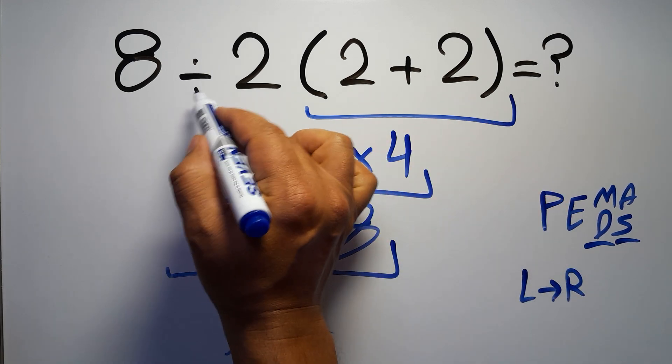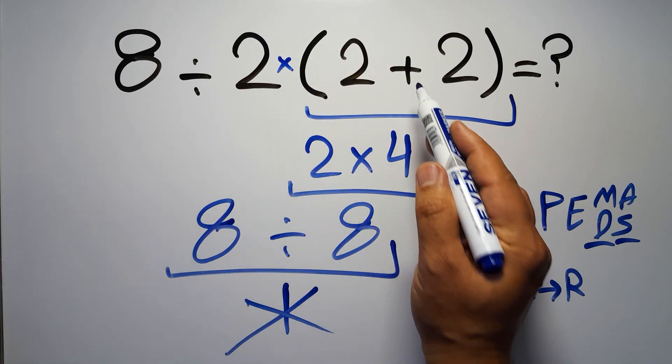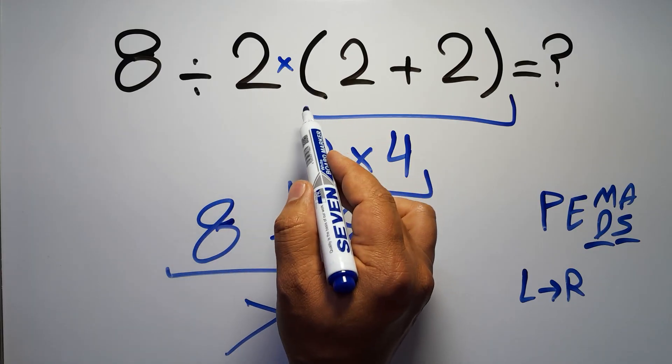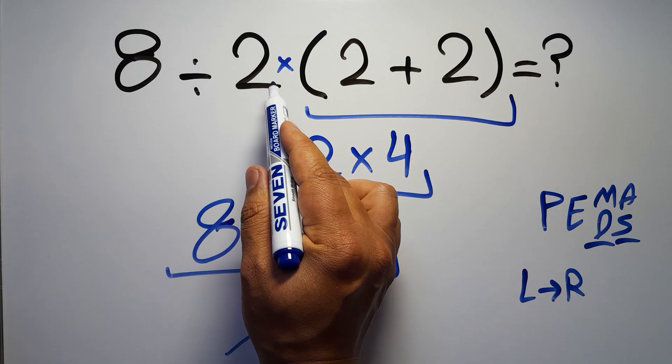In this expression we have one division, one multiplication, and one parentheses. Inside this parentheses we have one addition. Here we have a multiplication, because in mathematics when a number is placed next to parentheses it means multiplication, and we usually don't write the multiplication sign for brevity.